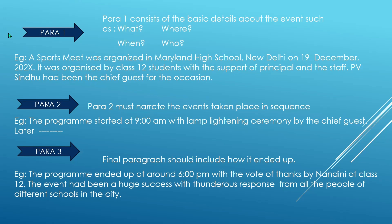Paragraph 2 must narrate the events that took place in sequence, one by one — how it happened. For example: 'The program started at 9 a.m. with a lamp-lighting ceremony by the chief guest.' School reports are generally written for annual day celebrations, sports day, cultural days, or food fests. You continue by describing who delivered a speech, the essence of their speech, who spoke next, and what the chief guest addressed — all written one by one in the second paragraph.